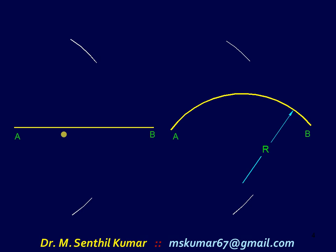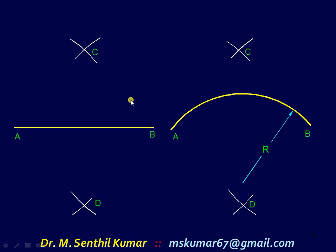With that radius, draw arcs with A as center. These are the arcs. Next, follow the same by drawing arcs with B as center. Thereby you will get the intercept — the points of intersection C and D.